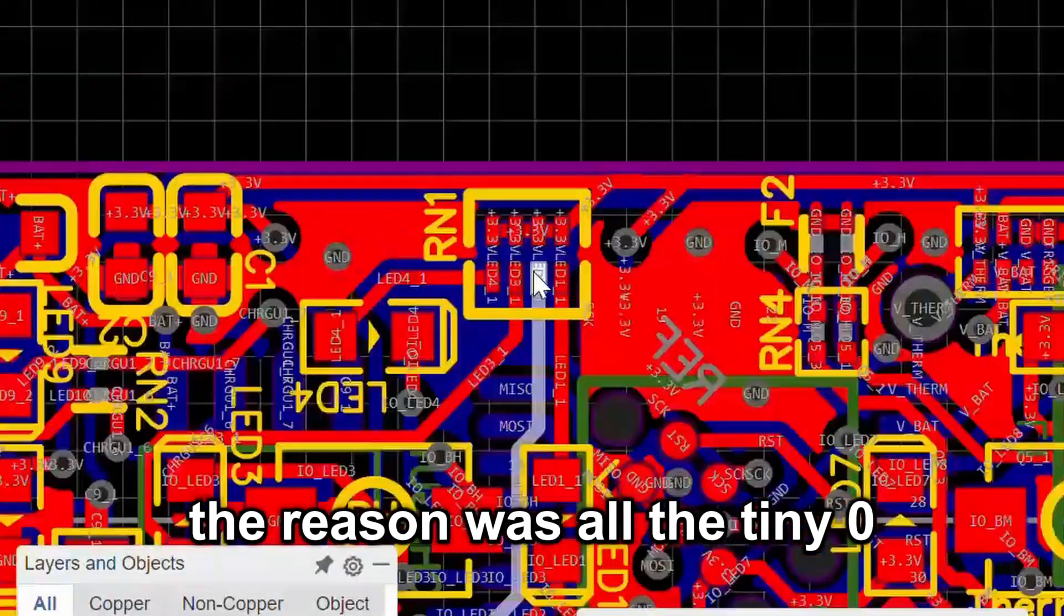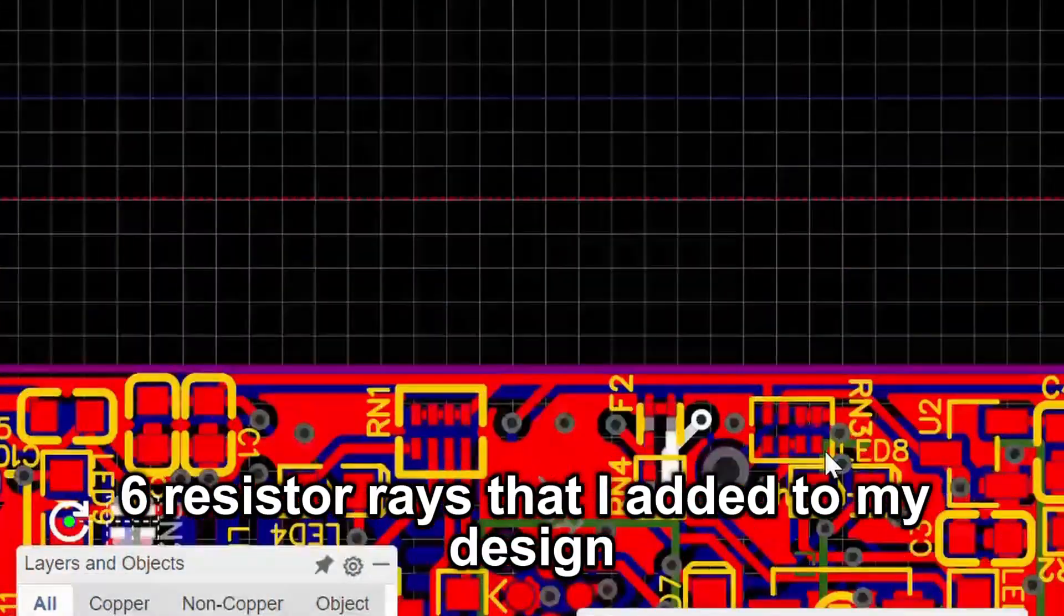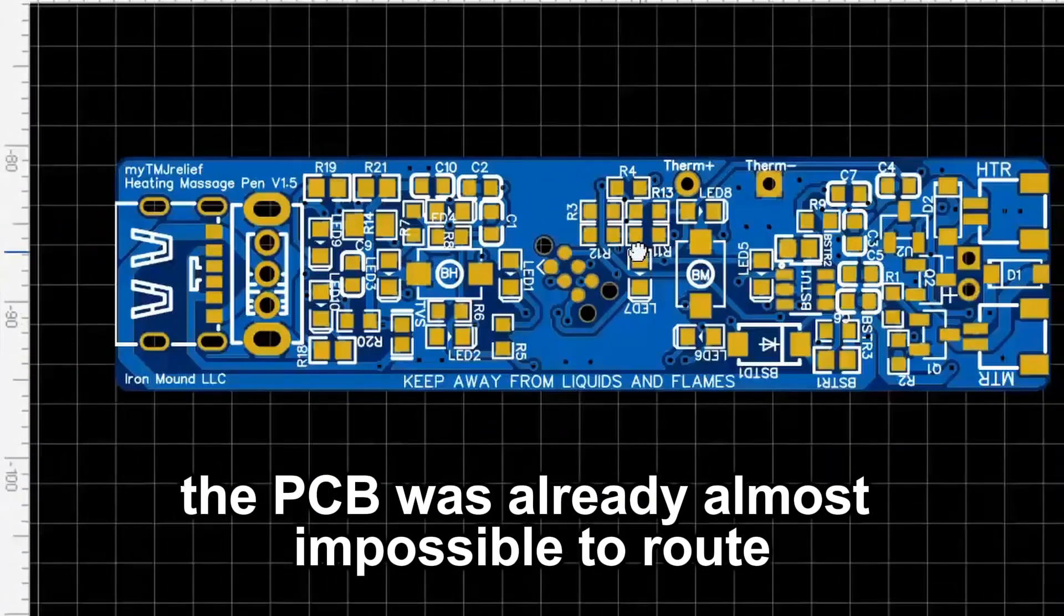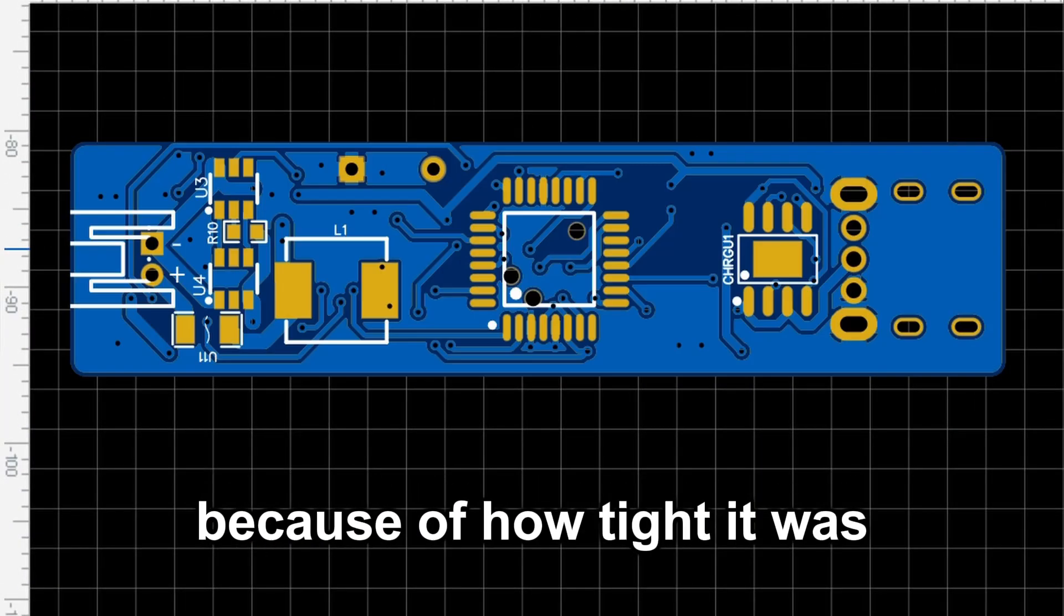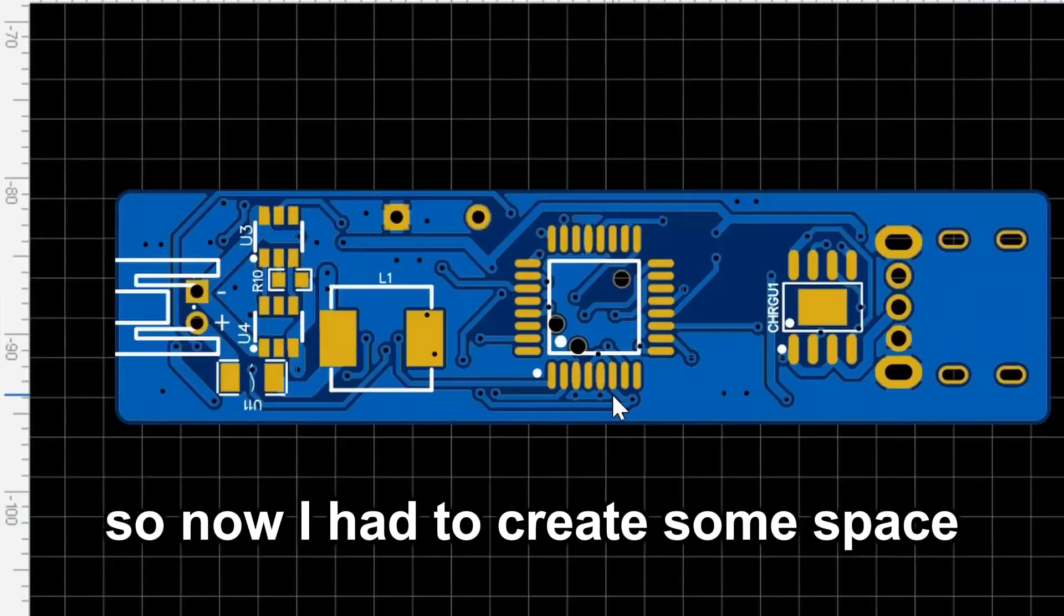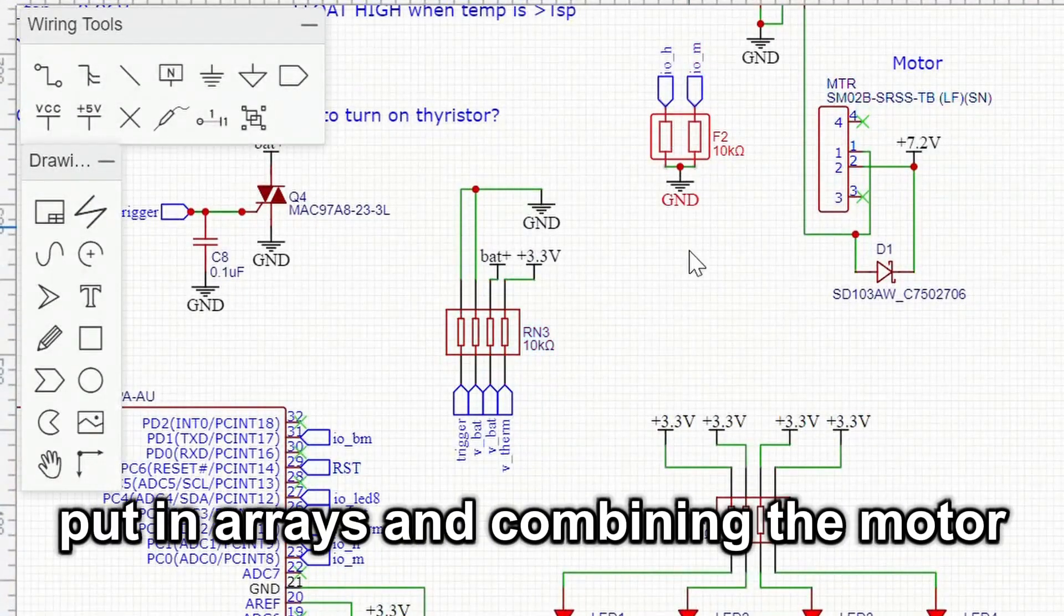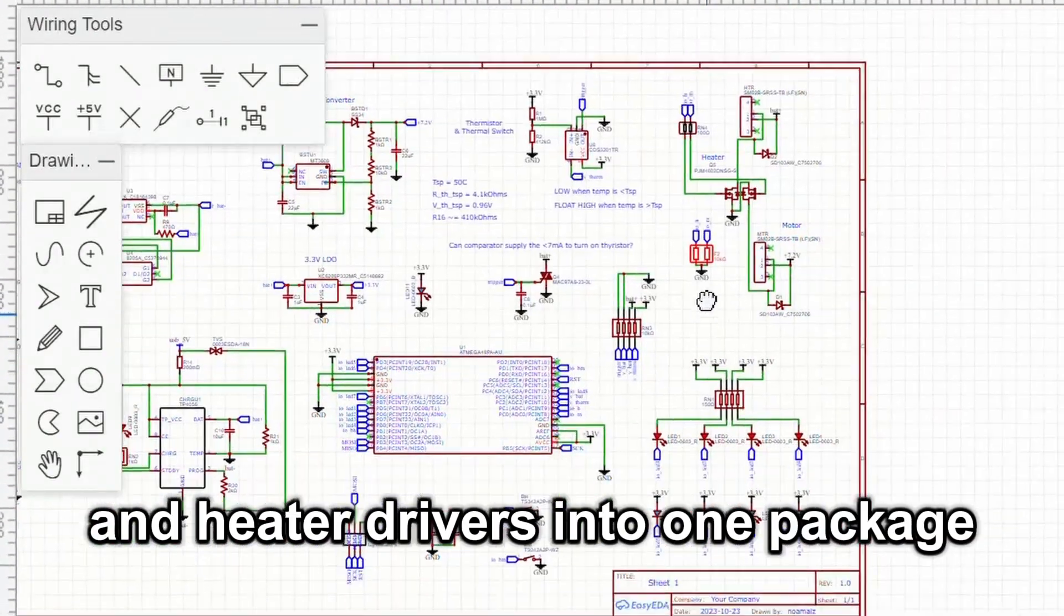The reason was all the tiny 0406 resistor arrays that I added to my design. You see, before adding the thermal protection, the PCB was already almost impossible to route, because of how tight it was. So now I had to create some space. I did this with smaller resistors put in arrays, and combining the motor and heater drivers into one package.